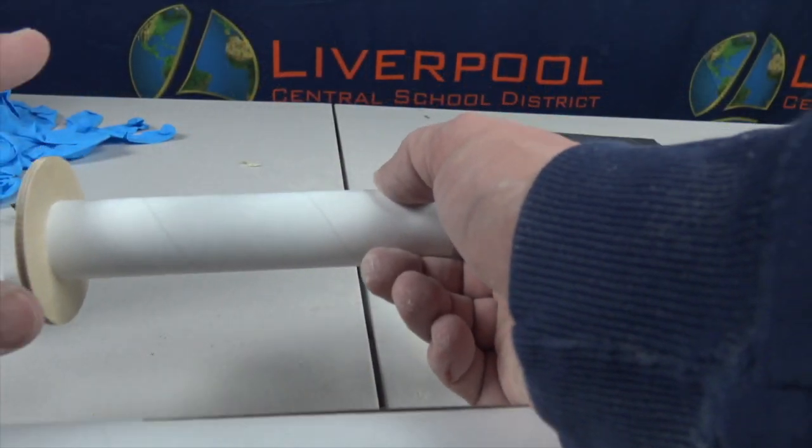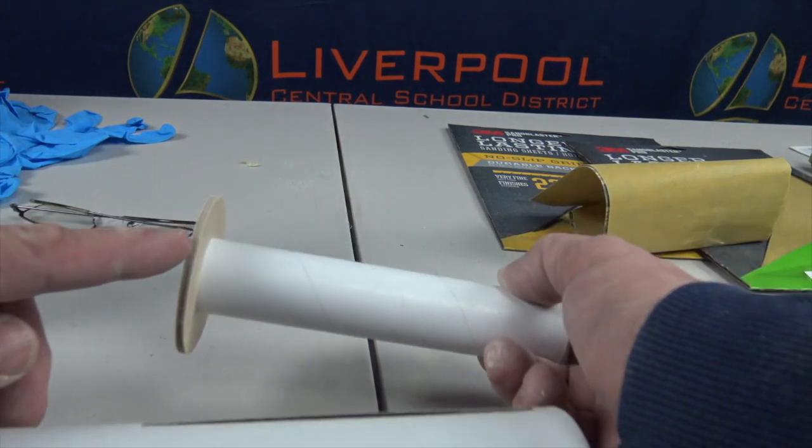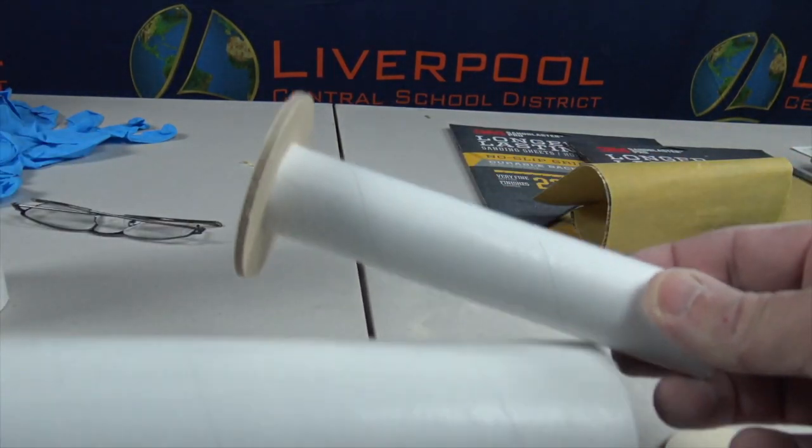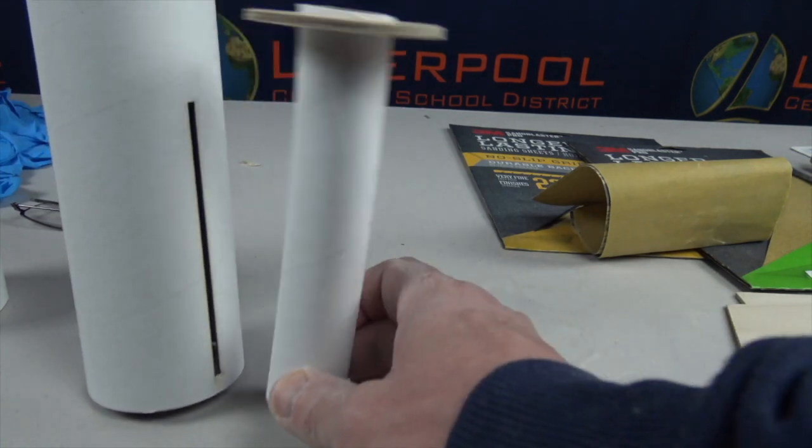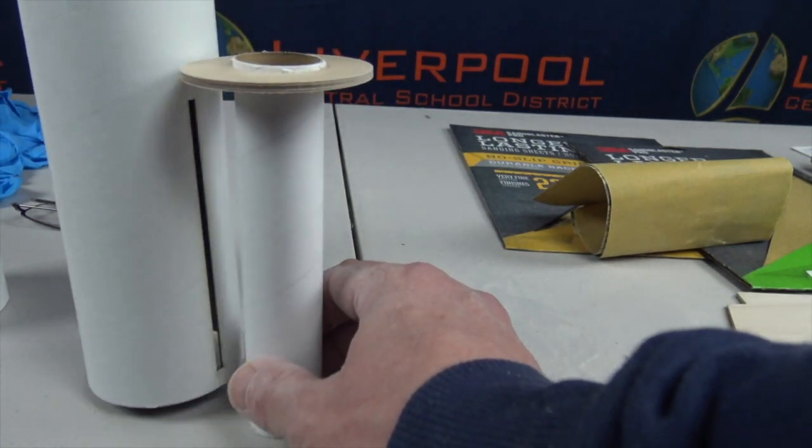So this is our forward centering ring. Forward meaning it's facing the top of the rocket. So as this is in here, it's going to be at the top.